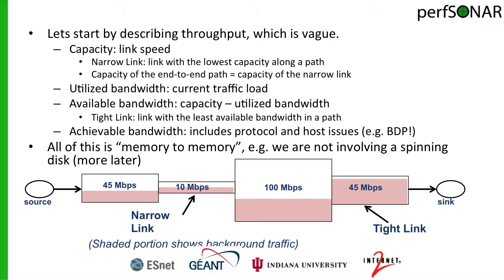In this example picture, we have different links connecting a source and a sink. Each of these different links has a different capacity. At the far end we have a 45 megabit per second link, then a 10, a 100, and another 45 megabit per second link. But if we think about the full end-to-end path, we have to define what the narrowest link is — in this case, it's the 10 megabit per second path.